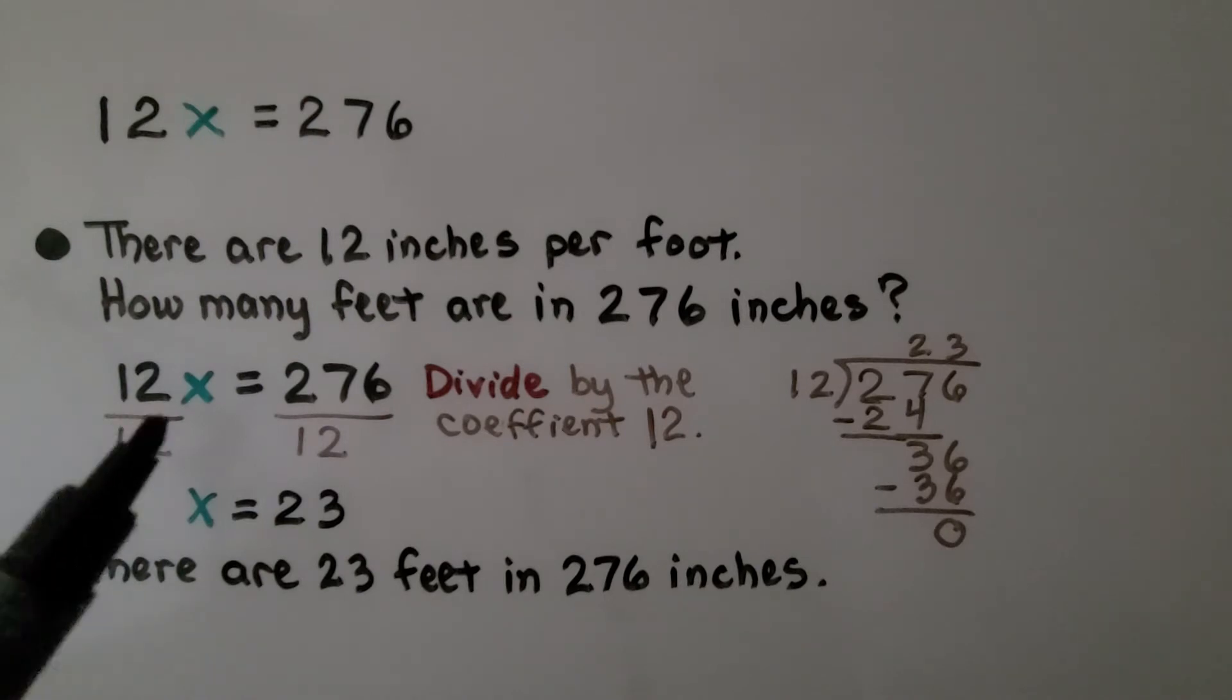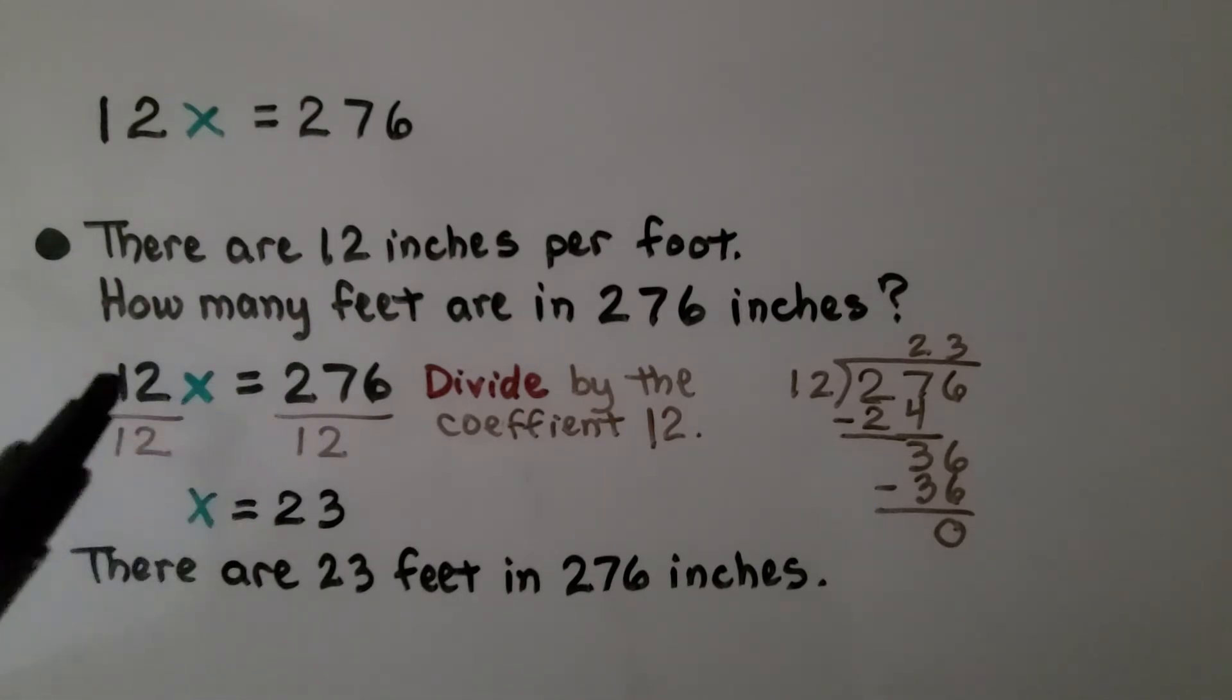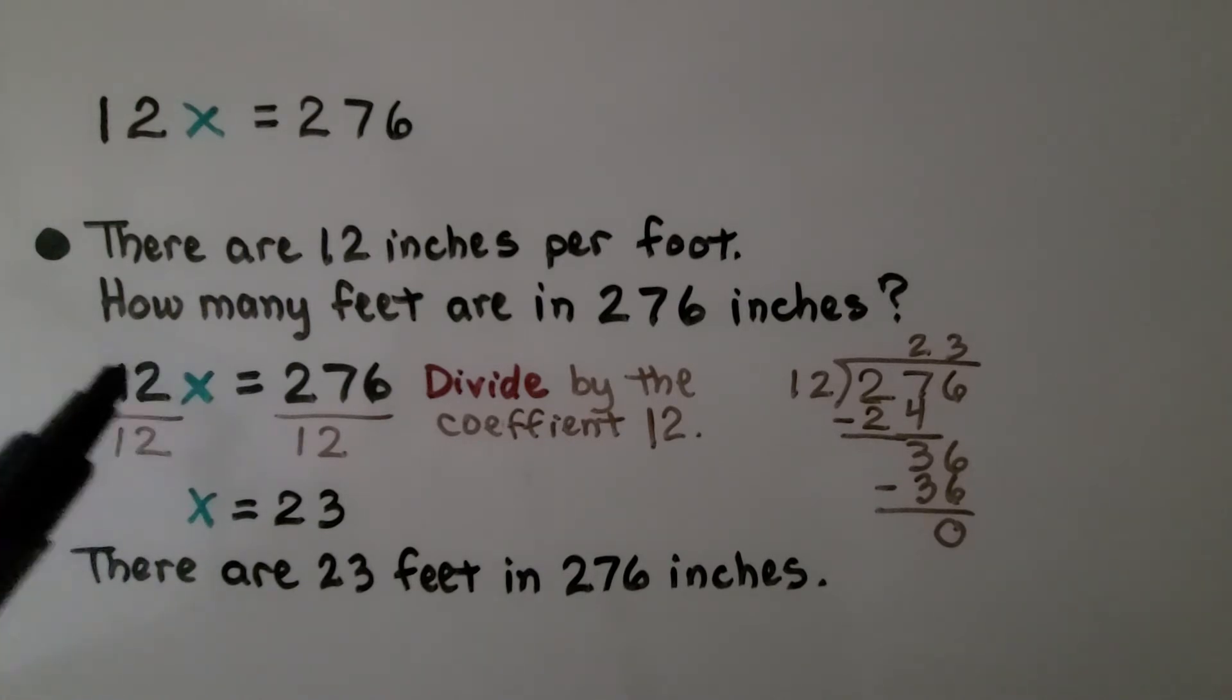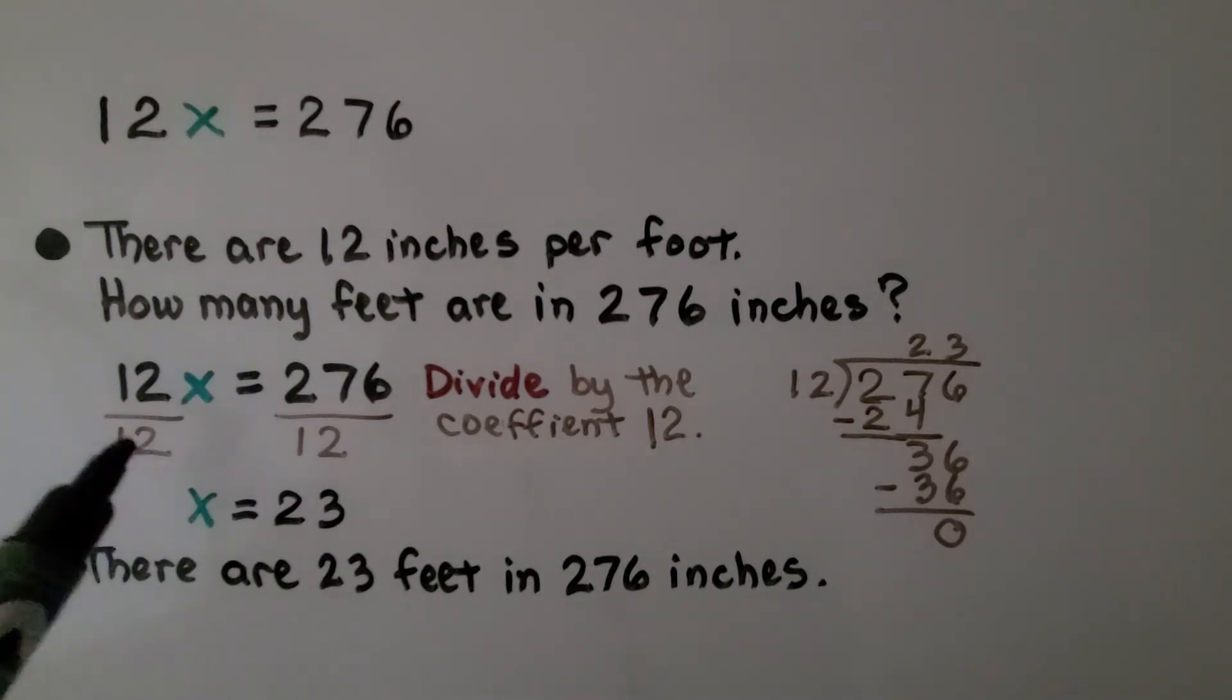We have 12x equals 276. We have a multiplication equation, so we're going to divide as the inverse operation. We're going to divide by the coefficient 12.